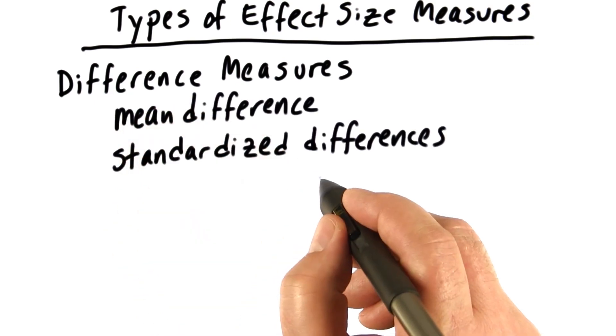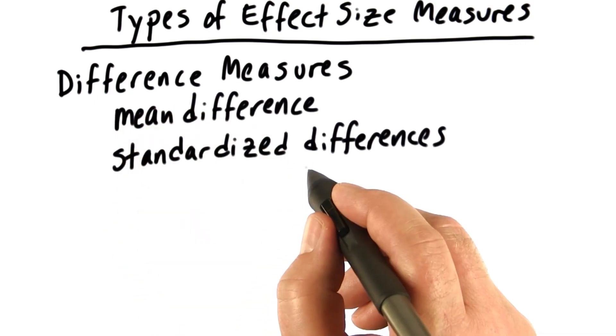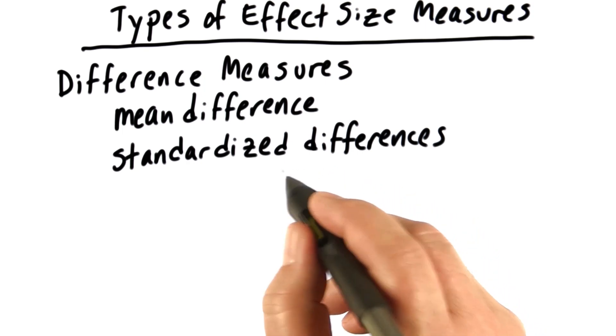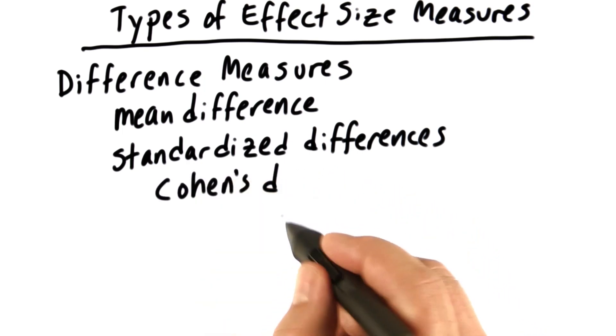The next type are called standardized differences. There are several different types of standardized difference measures, but we'll focus on one. And that measure is called Cohen's D. This is the standardized difference measure we're going to use throughout the rest of this course.